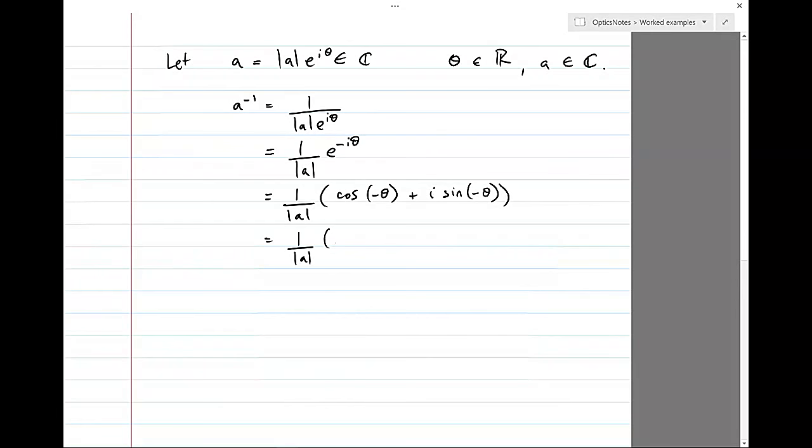And here we just use some simple facts about cos and sine. Cos of negative theta is theta because it's an even function. And sine of negative theta is negative sine theta, because it's an odd function of theta. This is now looking like something we can use to express the real and imaginary parts of A to the minus 1 in terms of the real and imaginary parts of A.